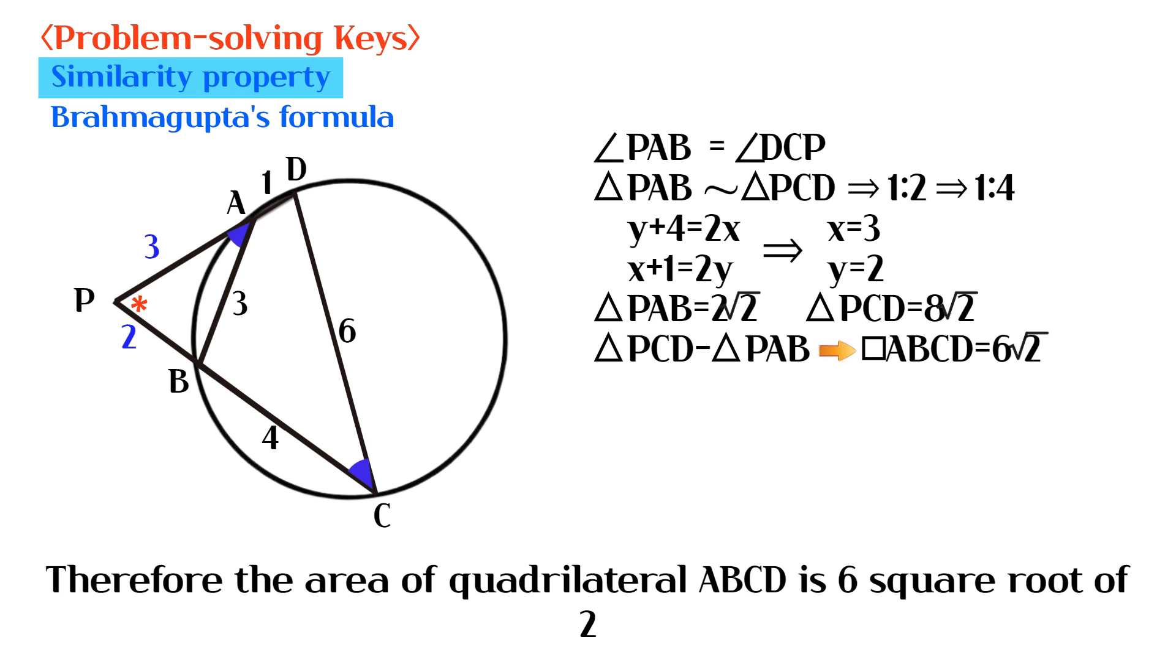Therefore the area of quadrilateral ABCD is 6 square root of 2.